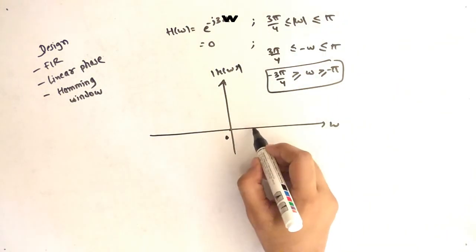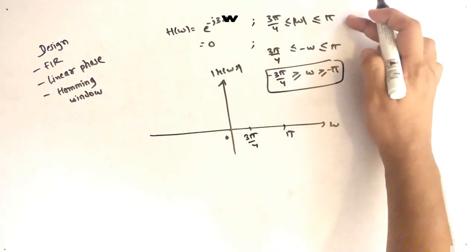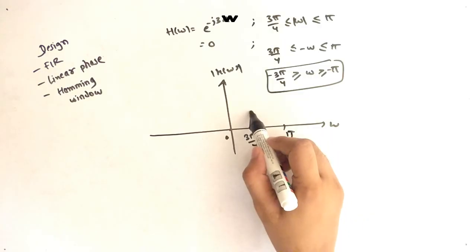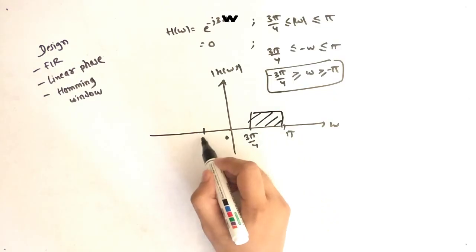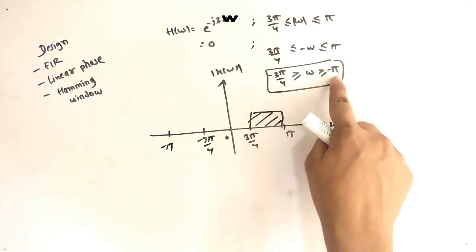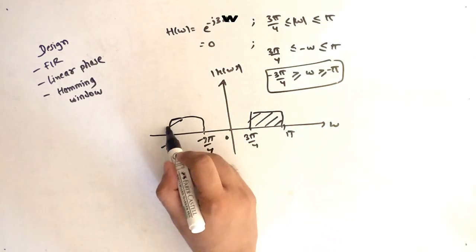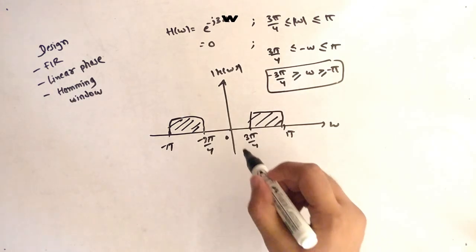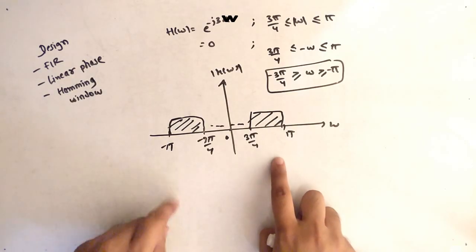On the x-axis we have ω and on the y-axis |H(ω)|. For positive values the range is greater than 3π/4 but less than π. For negative values the range is greater than −π but less than −3π/4. So we have two symmetric ranges.